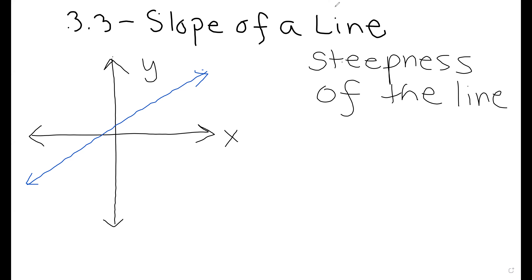The third section in chapter three covers linear equations and graphing lines. We've talked about graphing by plotting points and talked about intercepts. Now we're going to talk about the slope of a line.